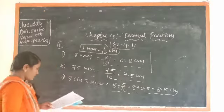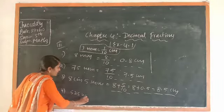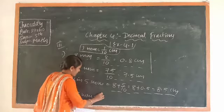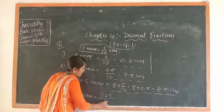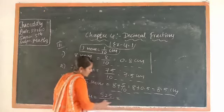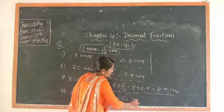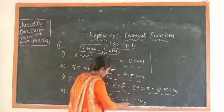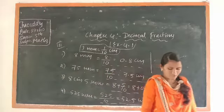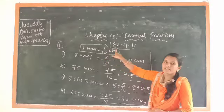In the fourth question, they give 525 millimeter. Convert to centimeter: 525/10. Here, one digit after the point, so the value is 52.5 centimeter. These are fill-in-the-blanks. The millimeter-to-centimeter proportion: 1 millimeter is equal to 1/10 centimeter — this is very important.